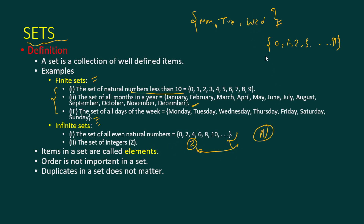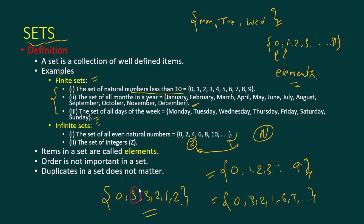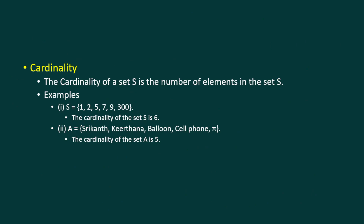Items in a set are called elements. In a set, order is not important — for the set of natural numbers less than ten, we could write zero, three, two, one, six, seven and it is still the same set. Also, duplicates in a set do not count as separate elements — for example, writing zero, three, three, two, one, two still represents the same set.